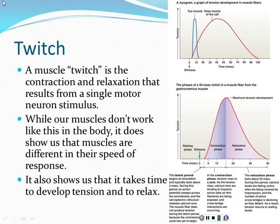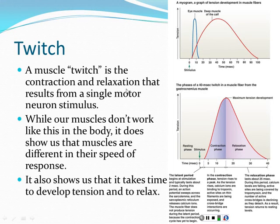Two other factors that play into force generation are the frequency of stimulation and the number of motor units involved. To understand frequency of stimulation, we have to look at a very simple muscle scenario. If the motor neuron were to fire just one time and create one action potential that triggered contraction, what we would get is called a twitch.